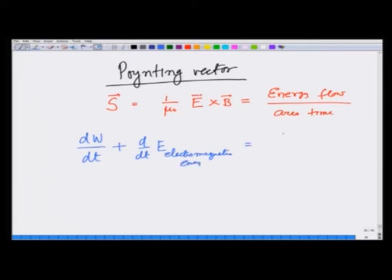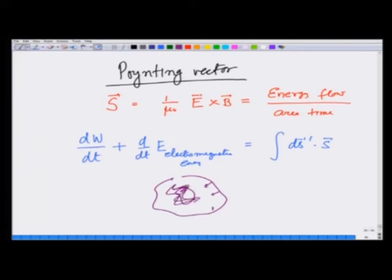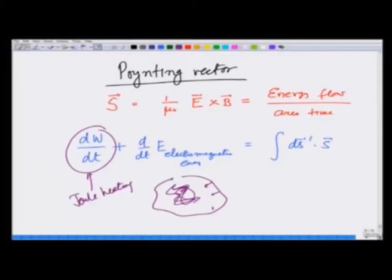This comes out to be equal to ∮ dS' · S, where dS' is pointing inward into a volume, relating to the electromagnetic and mechanical energy content inside. If mechanical energy increases, it may finally come out as Joule heating because charges gain kinetic energy and then lose it as heat. In this lecture I am going to do two examples to show this is true.